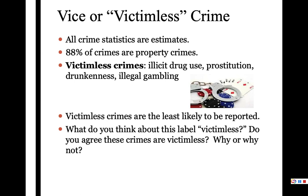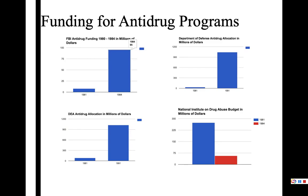Okay. Vice or victimless crimes are categories where the person committing the crime is very unlikely to report it because they are the one doing the crime. I want to talk a little bit about the War on Drugs here, because I think it's really important as we move into understanding the problem of mass incarceration in the United States.